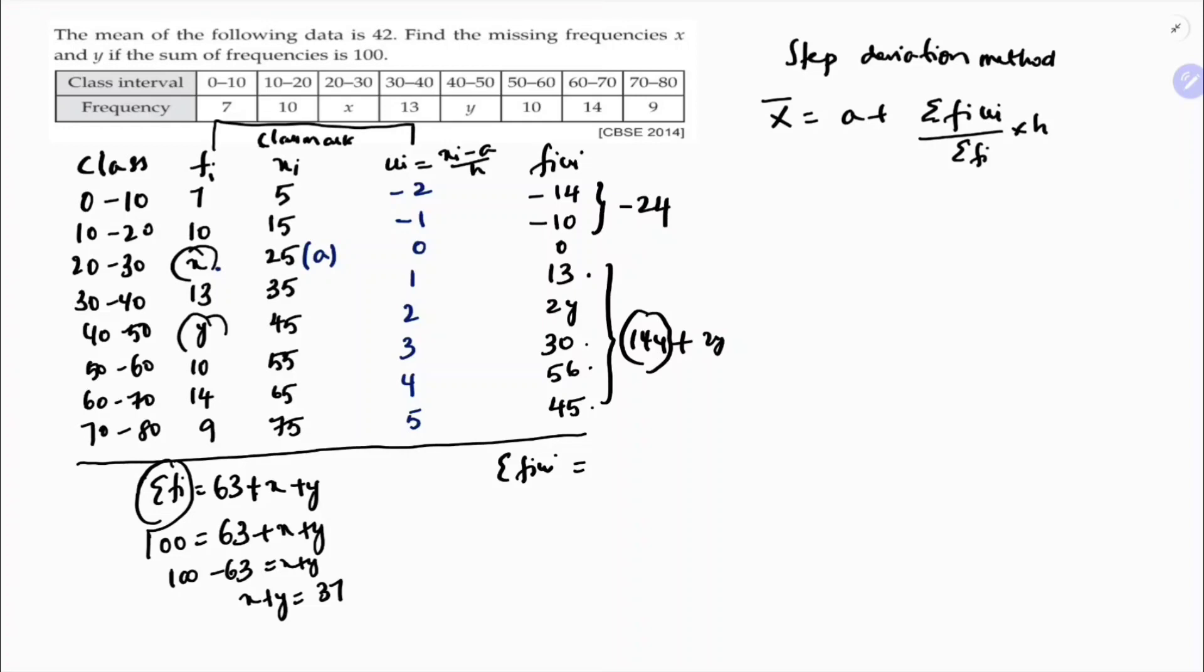Now substitute the values in the formula. Mean is 42, assumed class mark is 25, plus sigma FI UI, this value 120 plus 2y by sigma FI, total frequency is 100, into h is 10. So 42 minus 25 equals 120 plus 2y, 0 cancel, by 10.